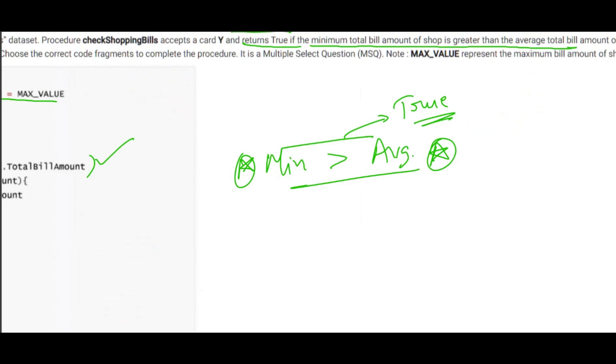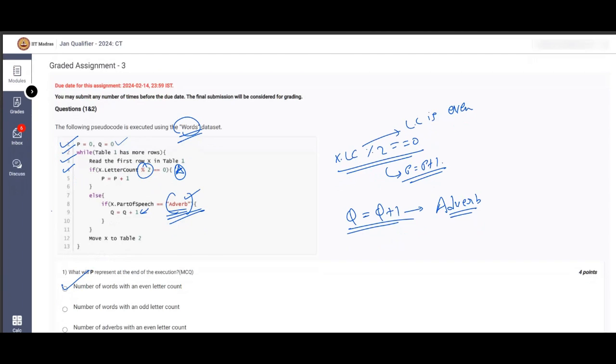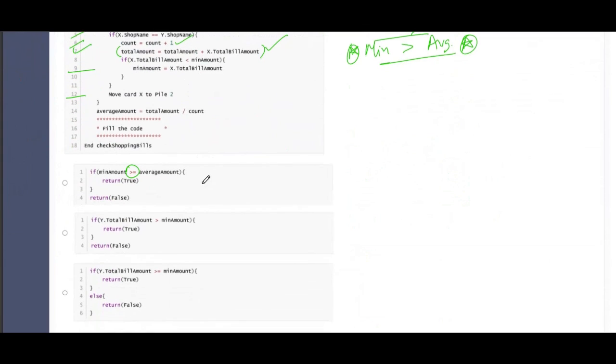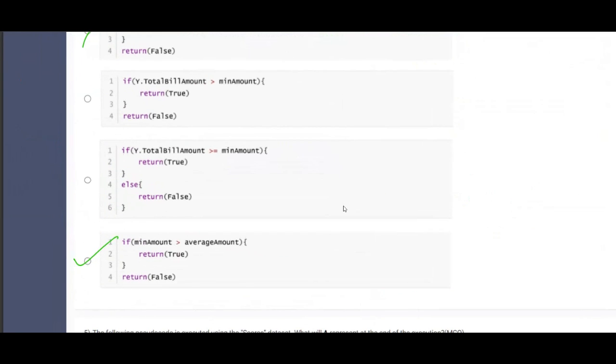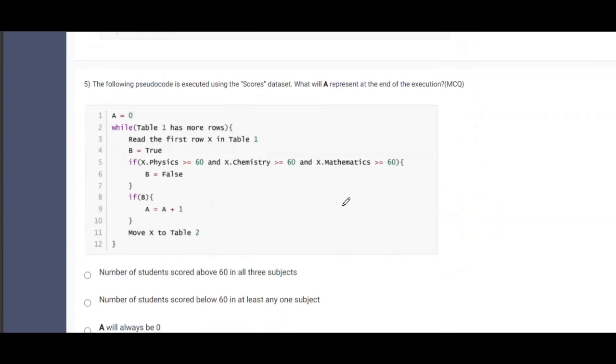So let us put the appropriate one. If minimum bill amount is greater than the average bill amount, it is not greater than or equal to, it is only greater than. Therefore, the correct option is B.